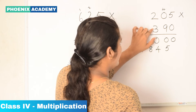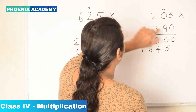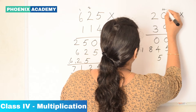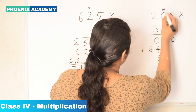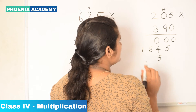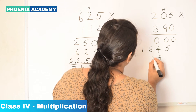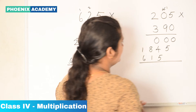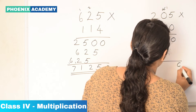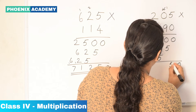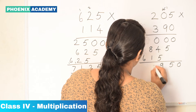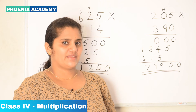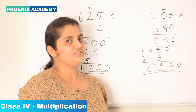Then multiply 3 with 205. 3 times 5 is 15, carry forward 1. 3 times 0 is 0, plus 1 is 1. 3 times 2 is 6. So the answer is 79,950.